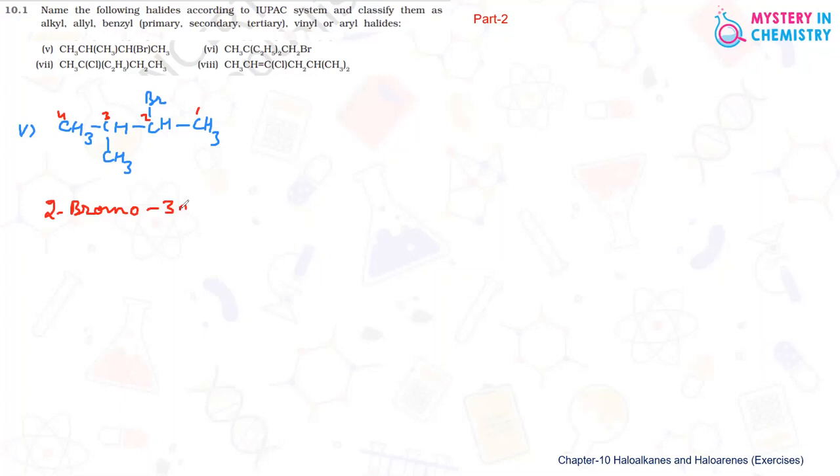Then 3-methyl, and after that the basic compound is butane. And this carbon is a secondary carbon which is containing Br, so it should be secondary alkyl halide.